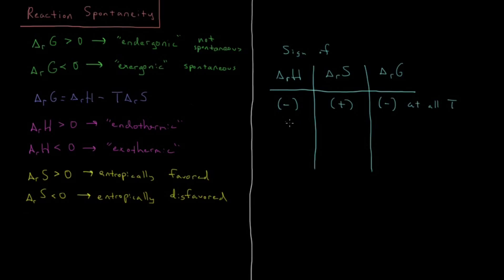Alternatively, if we have a reaction with a positive enthalpy — it is endothermic, it absorbs heat — and a negative entropy of reaction, it is entropically disfavored. Both of those are bad for delta G, so delta G of reaction will be positive. It will be endergonic and not spontaneous in the forward direction; it will be spontaneous in the reverse direction, and that is true at all temperatures.